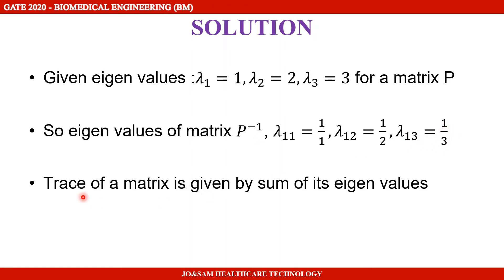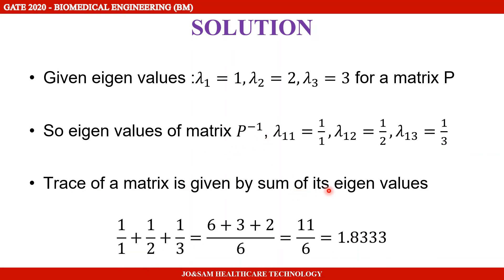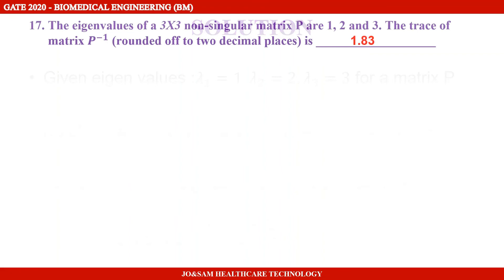The trace of matrix P inverse is the sum of these eigenvalues: 1 by 1 plus 1 by 2 plus 1 by 3, which reduces to 11 by 6, giving 1.833. Rounded to two decimal places, the answer is 1.83.